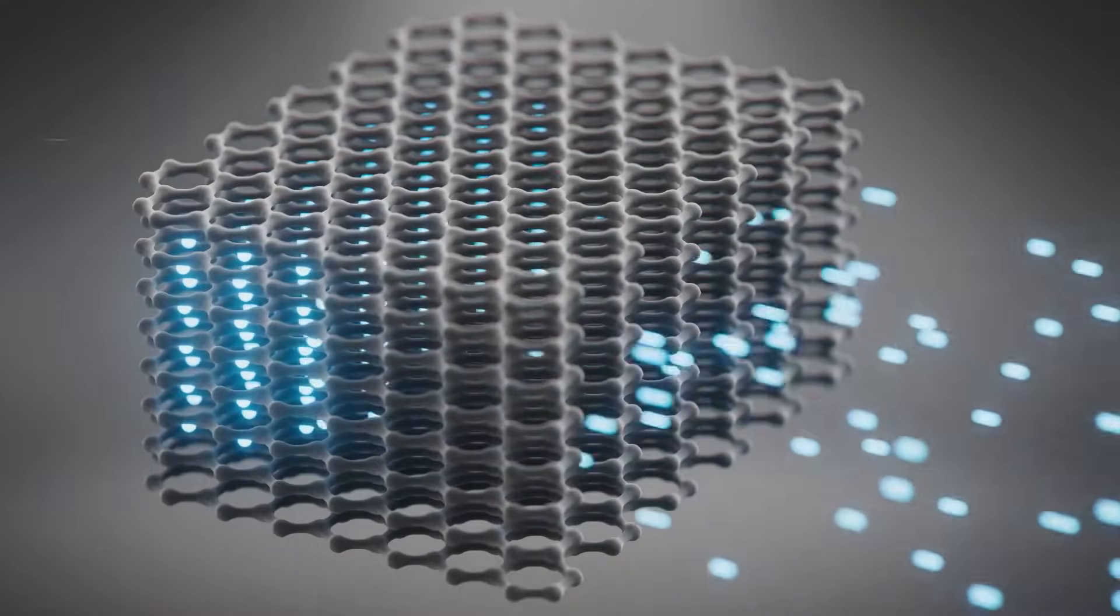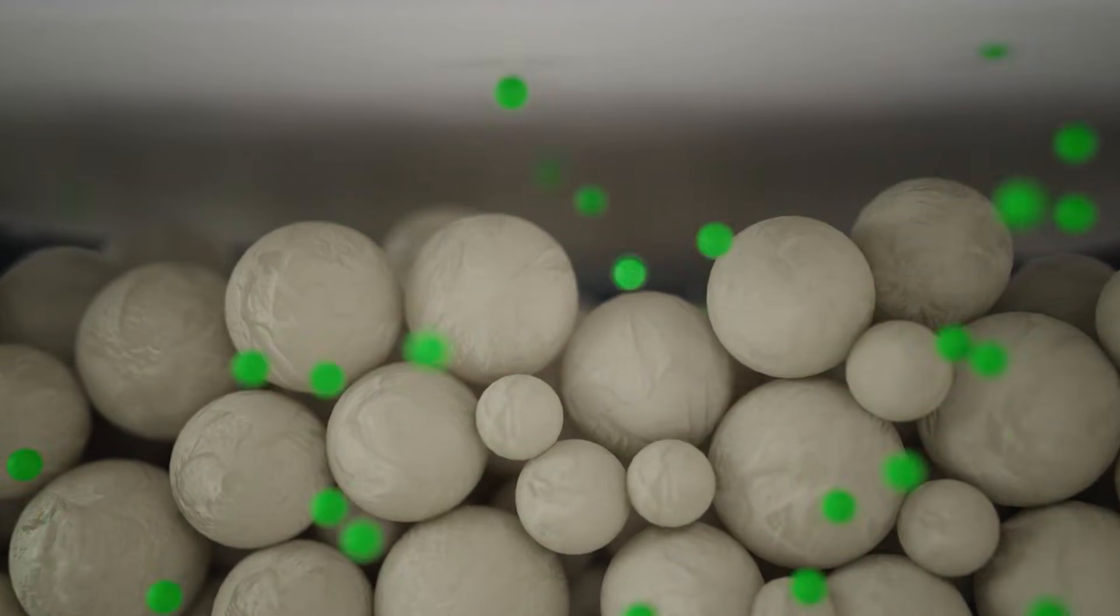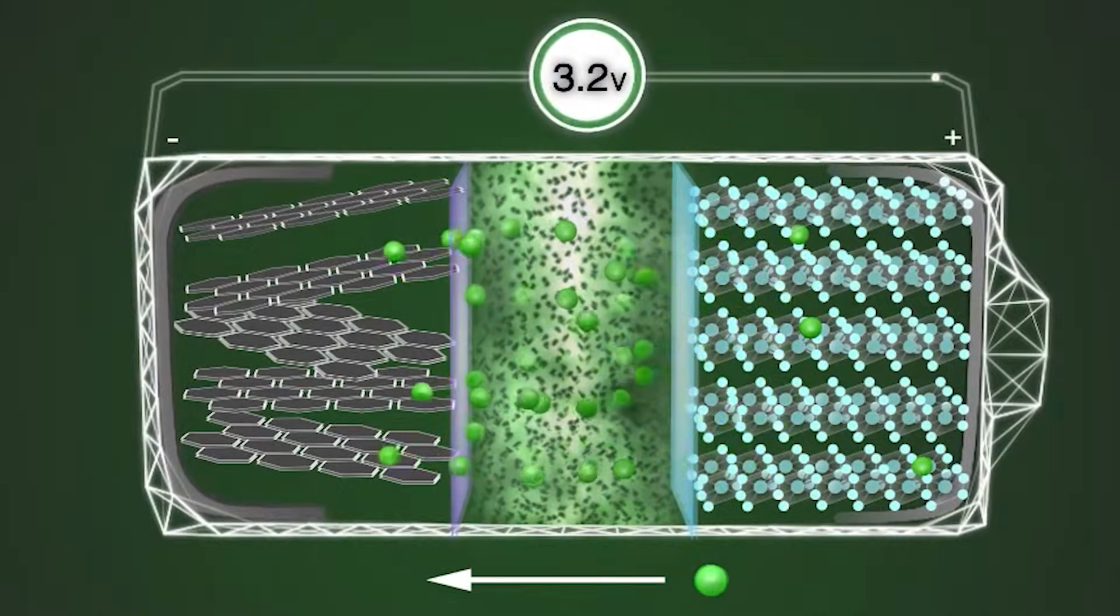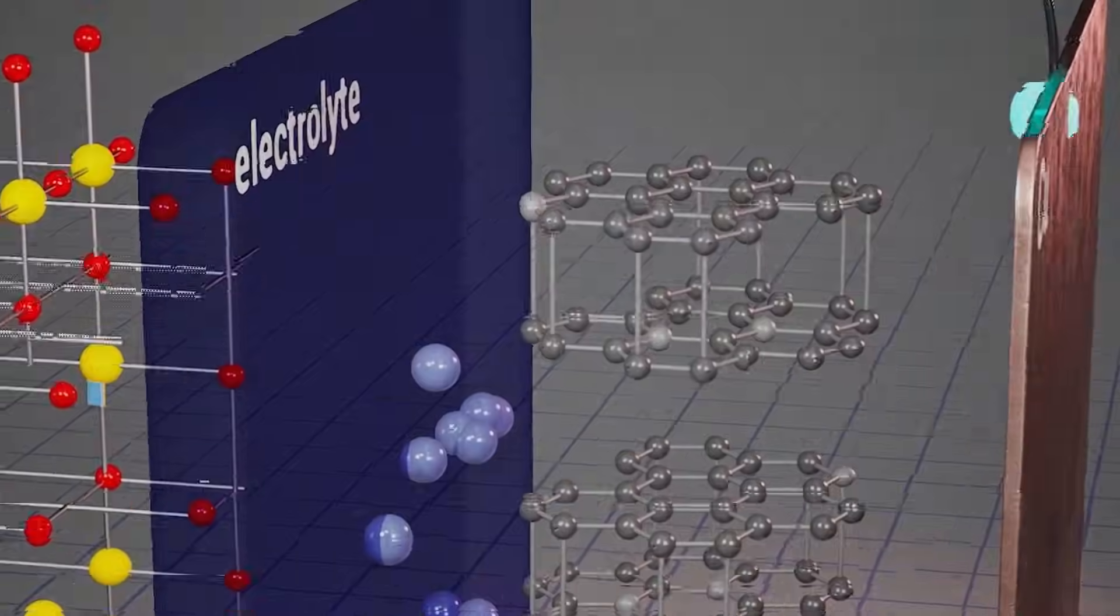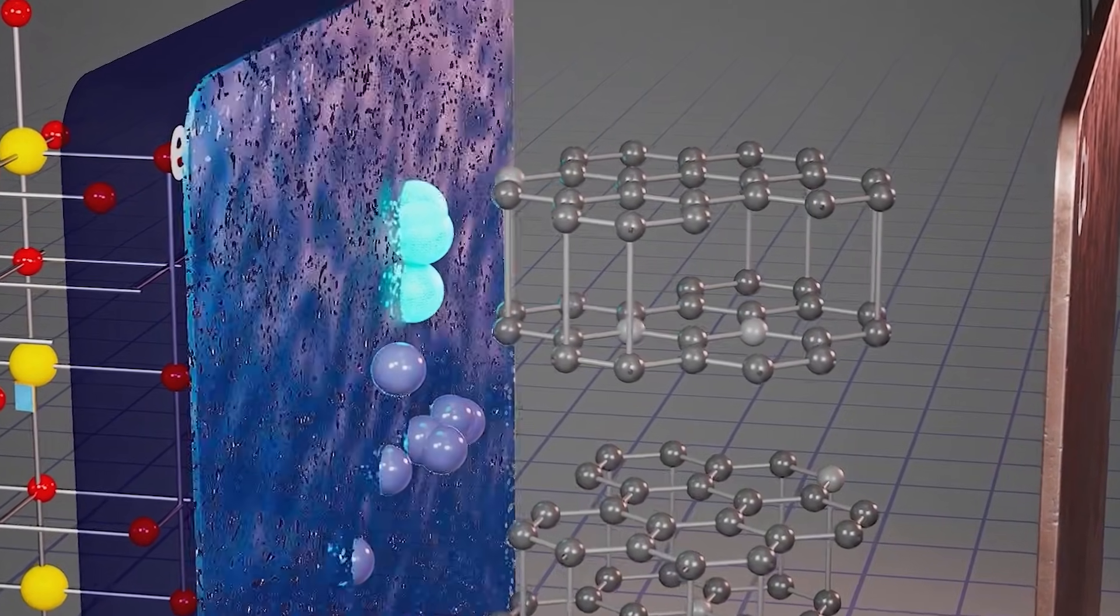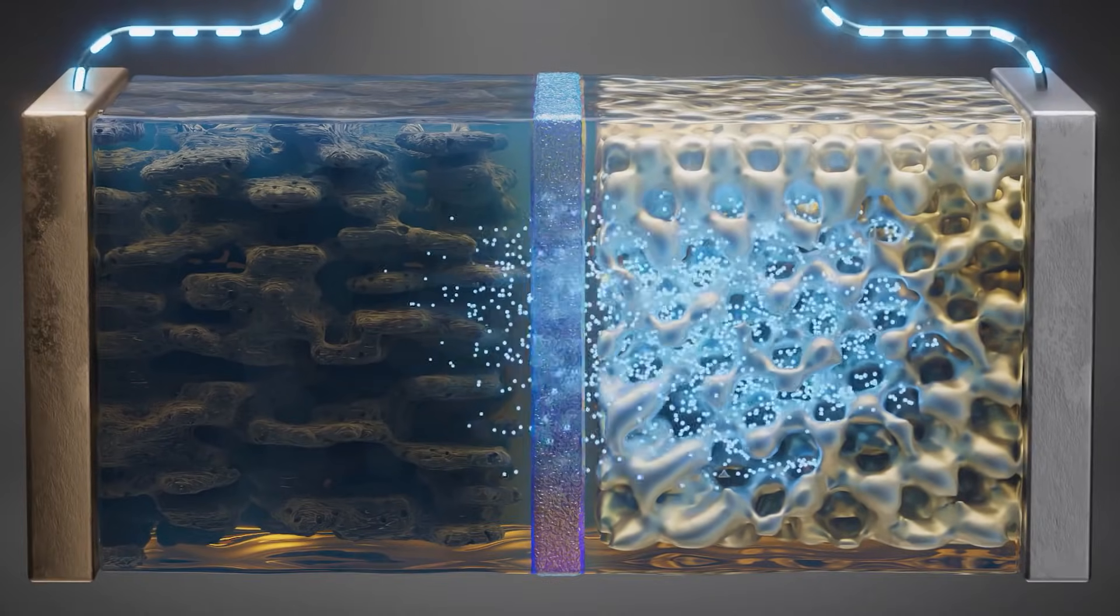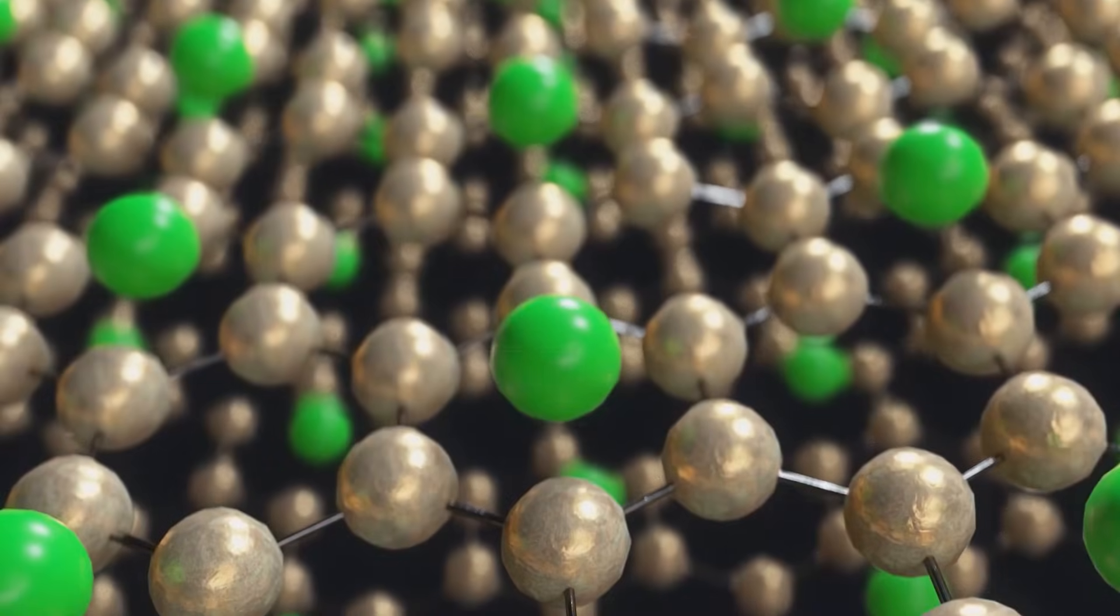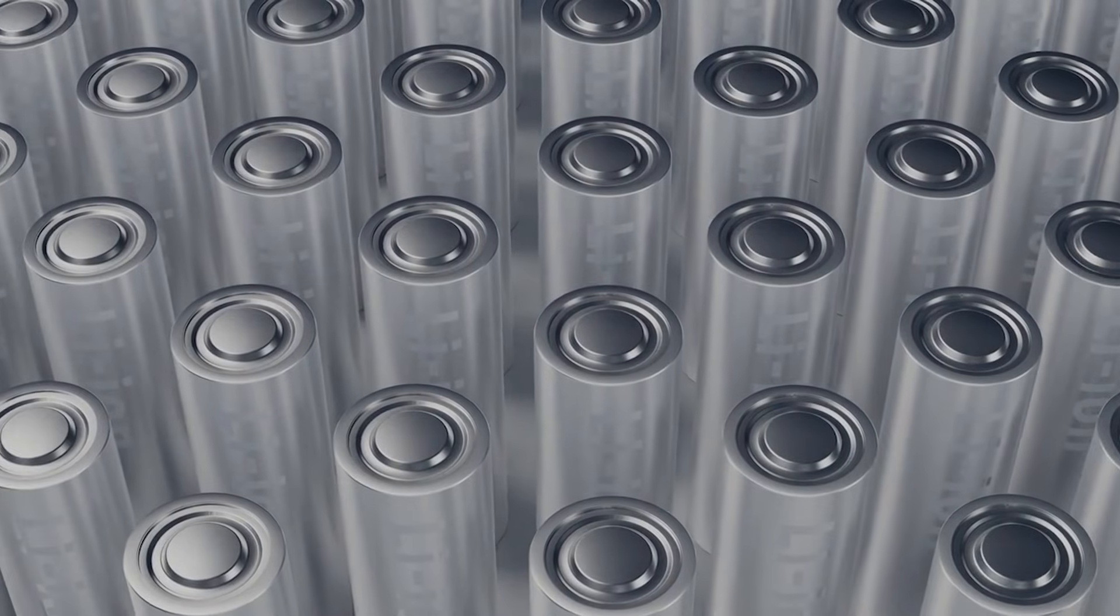At the anode, graphite particles get a first cycle makeover. Lithium, solvent, and additives react at the graphite surface and form a protective film called the solid-electrolyte interface, or SEI. This layer is solid. It stops the solvent from breaking down again and again. Yet it still allows lithium ions to pass through. Vinyl carbonate helps the SEI become more stable, which is a big reason good cells can survive thousands of cycles.